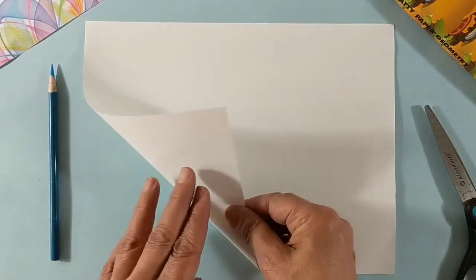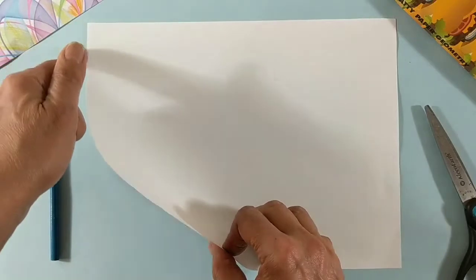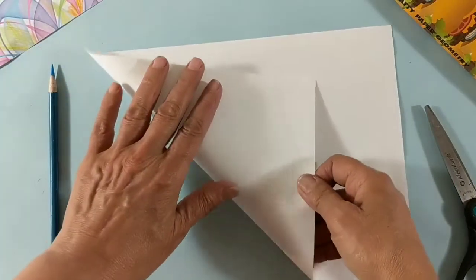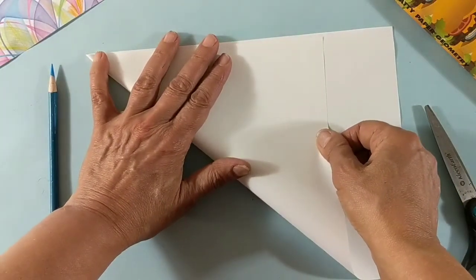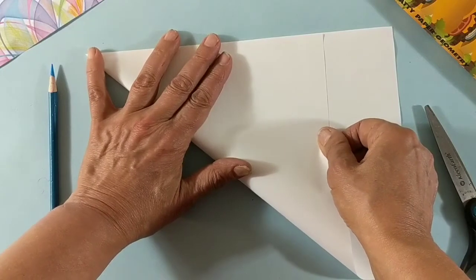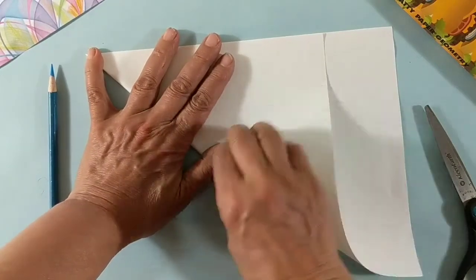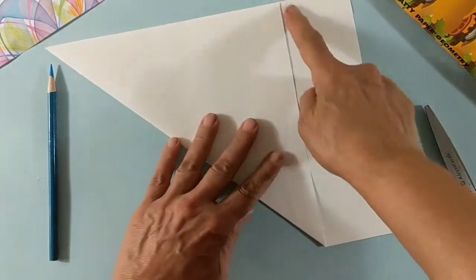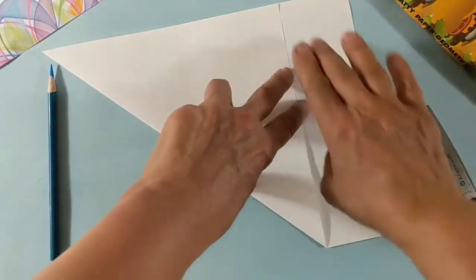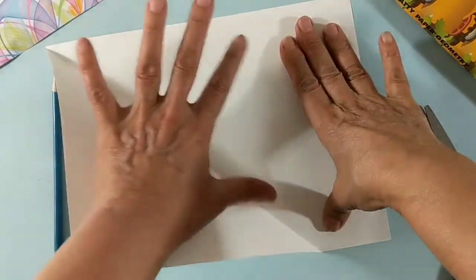The most common way people do it is to take this short edge and line it up to the long edge just perfectly, and then you cut along this line. When you open it up, you've got a square.